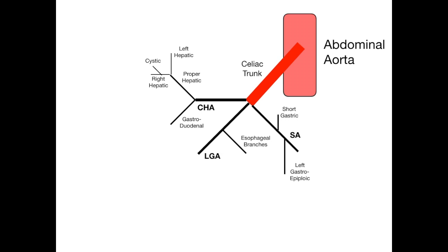At the end of this video, we said we'd discuss the gastroduodenal artery. It has one super high-yield fact you absolutely need to know for USMLE and COMLEX. The gastroduodenal gives rise to several arteries, including one not originally on the slide called the superior pancreaticoduodenal artery, which comes off the gastroduodenal, which comes from the common hepatic.